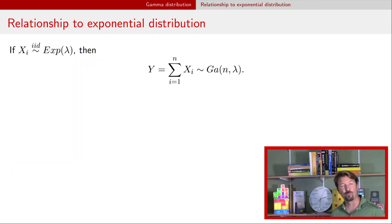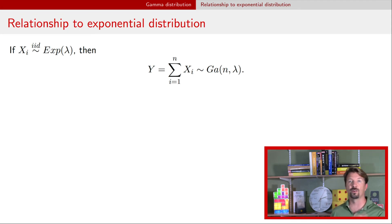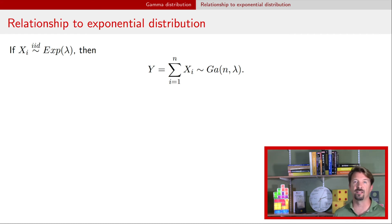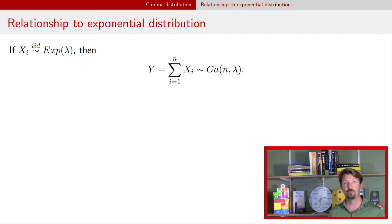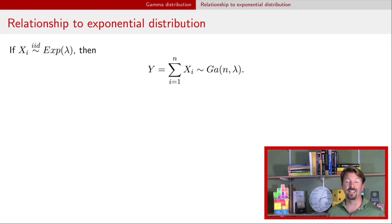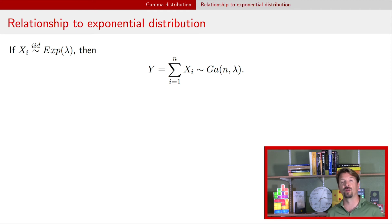There is an important relationship with exponential distributions. If you have a set of independent exponential random variables with the same rate parameter lambda, and you take their sum, you have a gamma random variable. The rate parameter is the same as those exponentials had, and the shape parameter is n. Similarly, if you have a gamma random variable where the shape parameter is 1, that's equivalent to an exponential random variable.